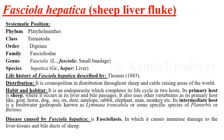They have two suckers: an oral sucker and an acetabulum, but neither sucker has any hooks. They have a single excretory pore at their posterior end, and the uterus has numerous celled eggs. Their larval cycle involves many larval stages including two or three intermediate hosts — that's why they are kept in order Digenea.